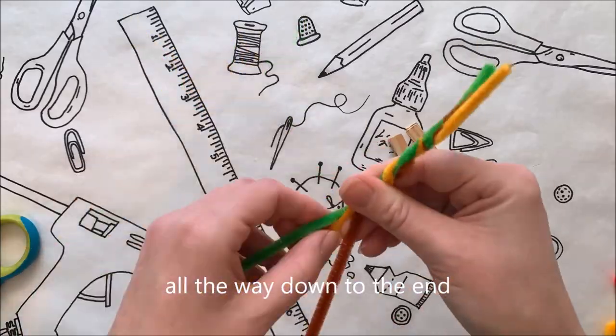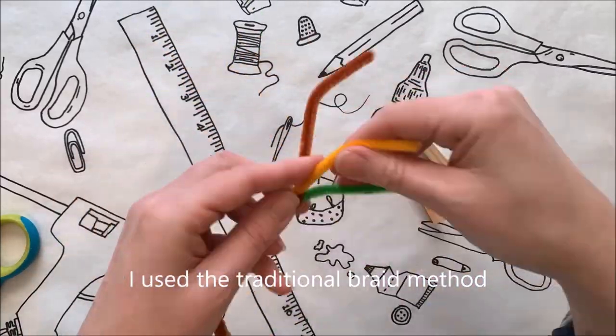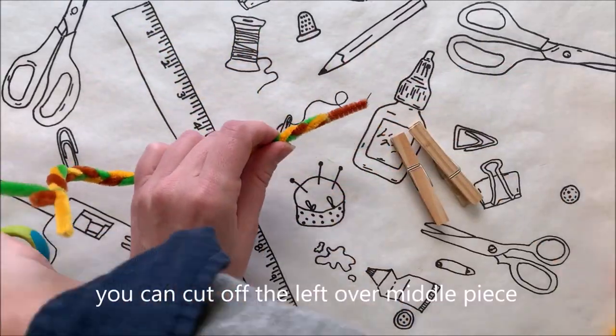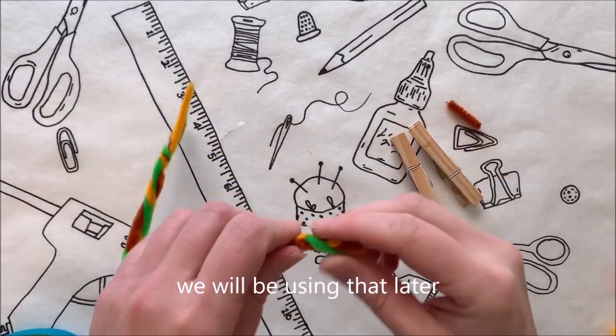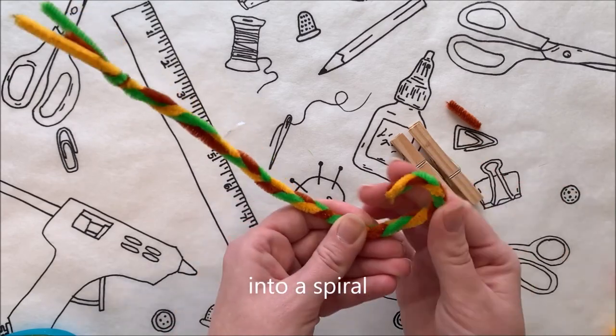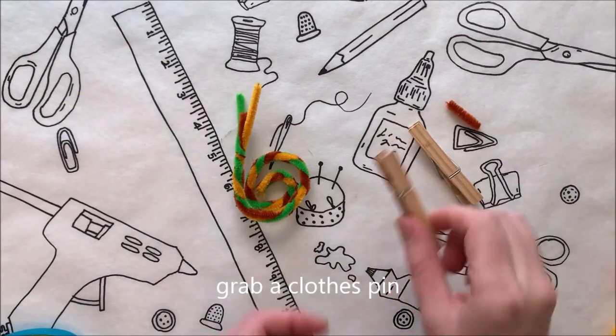Now wrap the three pieces together all the way down to the end. I use the traditional braid method. Once you get to the end, you can cut off the leftover middle piece and put it to the side. We will be using that later. Now coil up the rest of the pipe cleaners into a spiral all the way to the head of the snail.